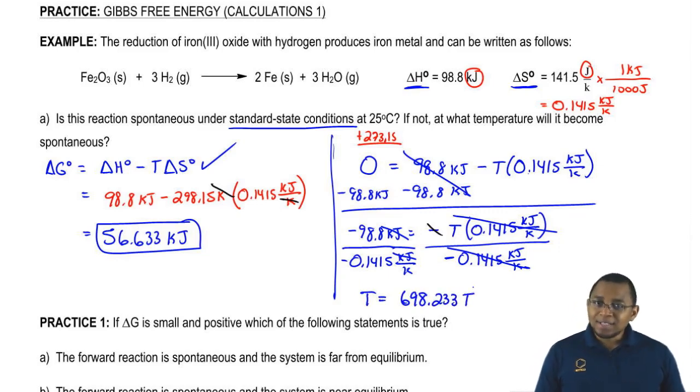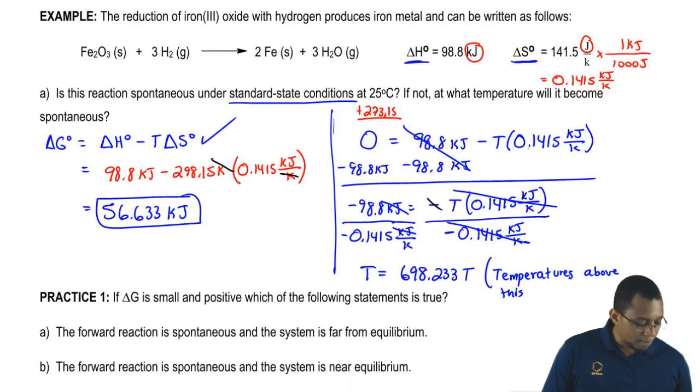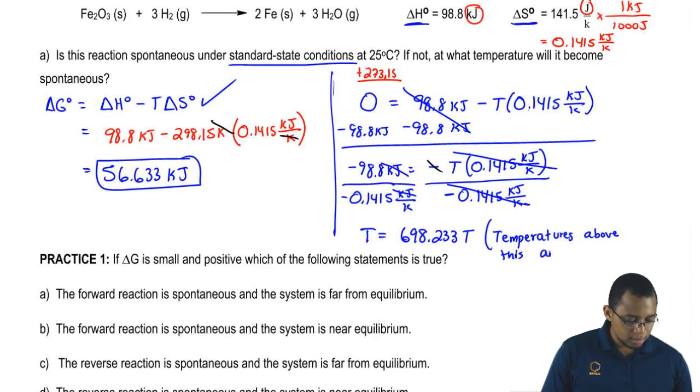Technically, if we take that number and plug it back in, then delta G will equal zero. When delta G equals zero, we're at equilibrium. We're technically still not spontaneous. What you would say is temperatures above this answer would give you a spontaneous reaction. Temperatures above this answer would be spontaneous. Temperatures below it would be non-spontaneous.